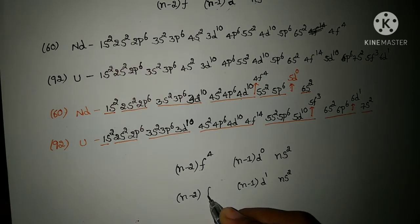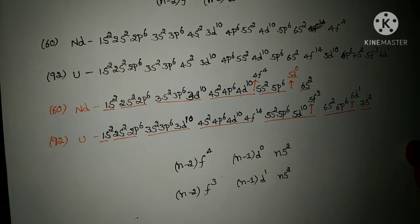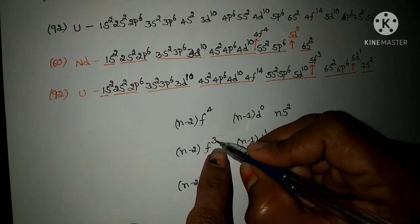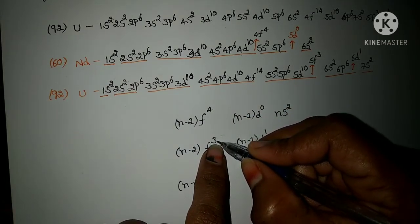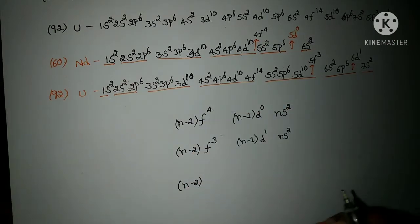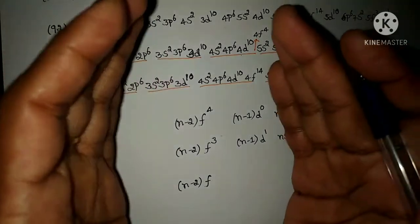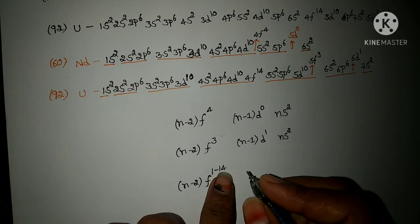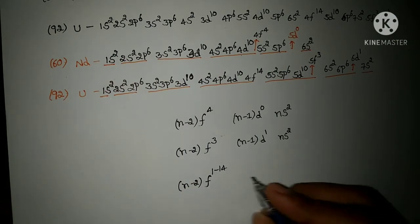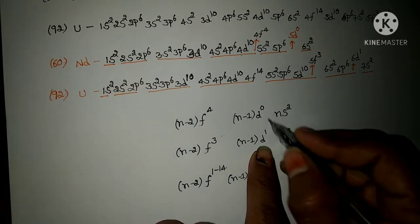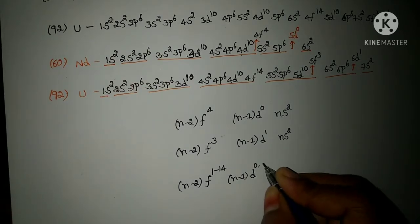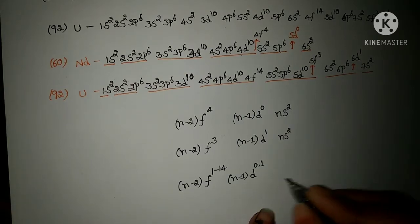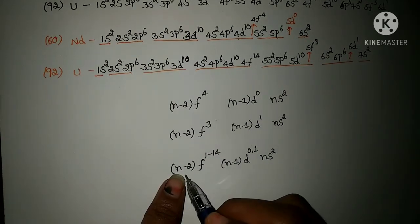Writing together for uranium: in the anti-penultimate shell n minus 2, the f orbital has three electrons; in another example neodymium it had four electrons. Overall, the capacity of the f orbital is 1 to 14 electrons. In the penultimate shell, either zero or one electron may be present. In the valence shell, two electrons are always present.